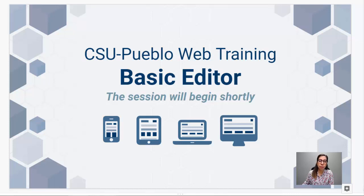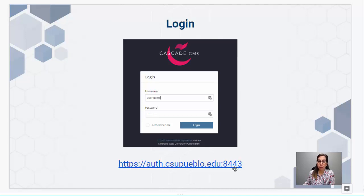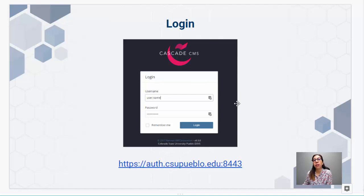The most important thing is the URL for Cascade. Sometimes people go to training and then forget what the actual URL is. You can access this from anywhere — you don't have to be on campus — so just remember this URL and it'll take you to a login page. You're going to use your CSU Pueblo credentials to log in.